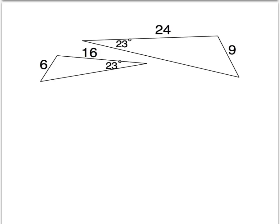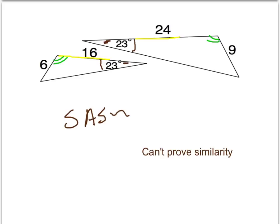In this pair of triangles, we know something about one pair of angles — 23 and 23 — and we know two pairs of sides. So it seems like we might want to check SAS similarity. The problem with this pair is that the angle we're dealing with isn't the included angle — it only touches one of the pairs of sides we know about, this 16 and 24 side pair. Since we don't know that those other angles are congruent, we can't prove that these two triangles are similar.